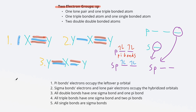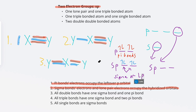Here are the key takeaways: Pi bond electrons always occupy the leftover P orbitals. Sigma bond electrons and lone pair electrons occupy the hybridized orbitals. All double bonds have one sigma bond and one pi bond. All triple bonds have one sigma bond and two pi bonds. All single bonds are always sigma bonds. This foundation is really important for future topics like molecular and electron geometry, and conjugation.